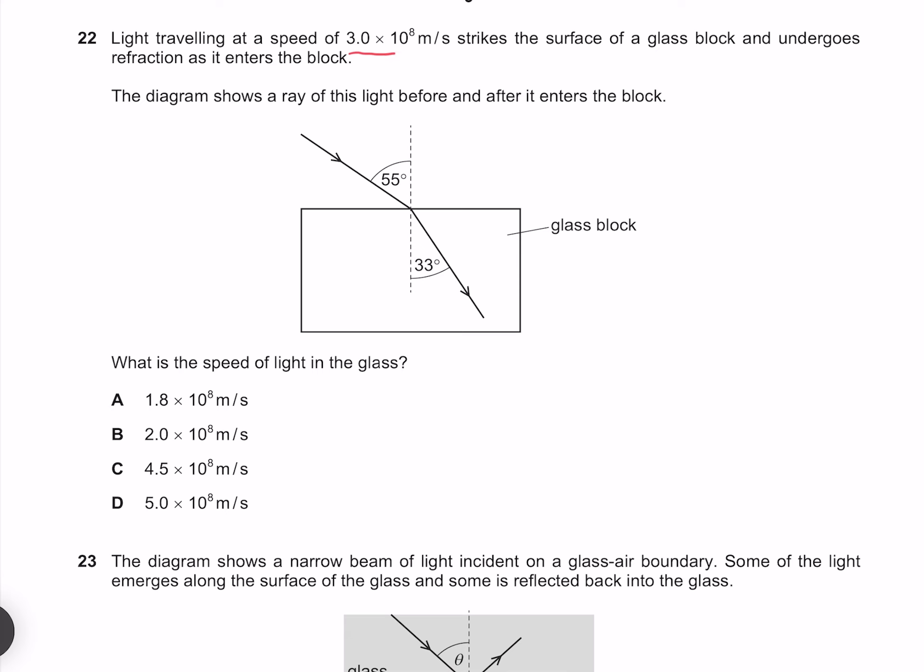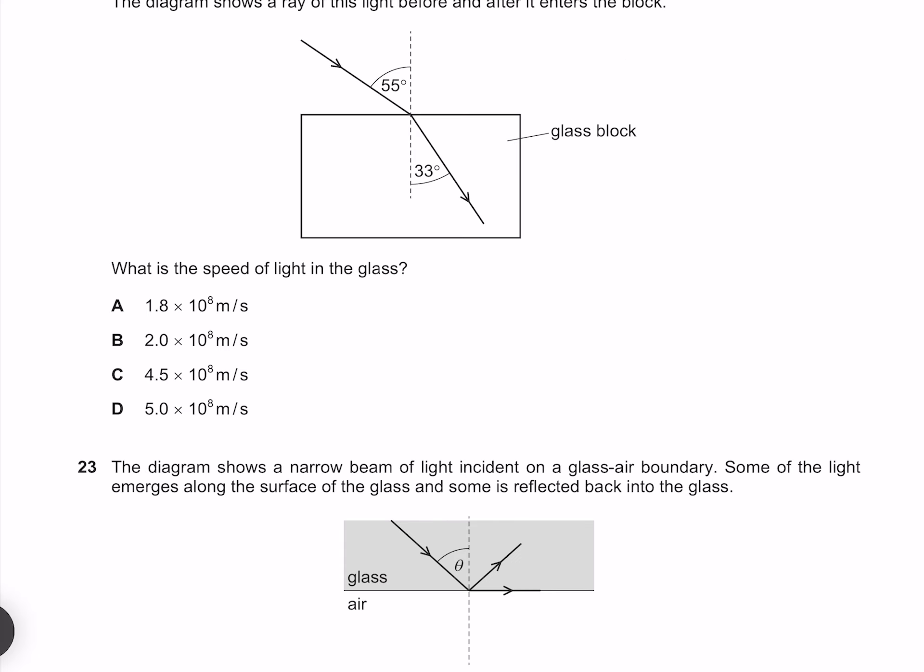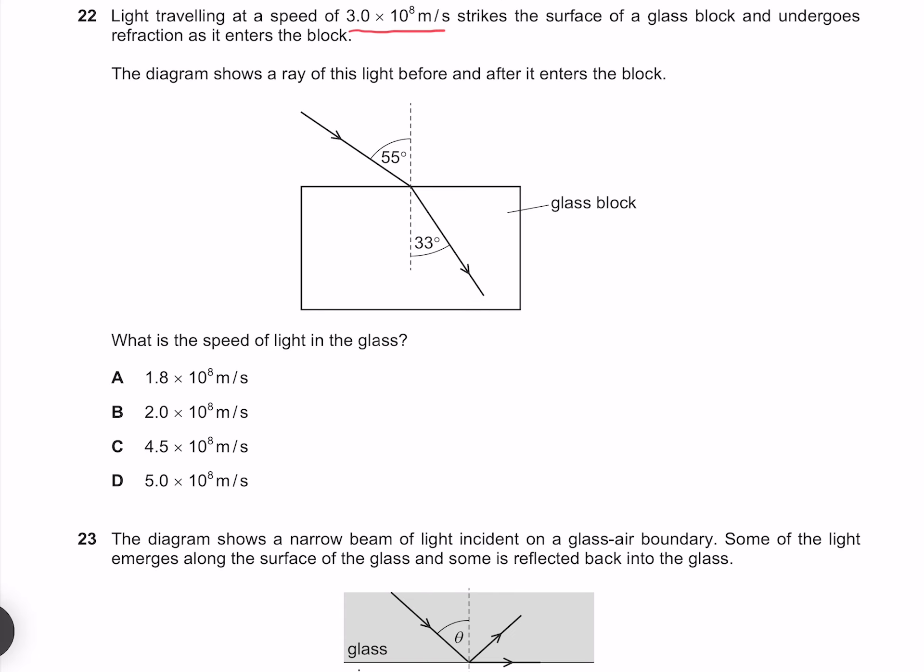Light traveling at 3 times 10 to the 8 meters per second strikes the surface of a glass block and undergoes refraction as it enters the block. The diagram shows a ray of this light before and after it enters the block. What is the speed of light in the glass? The ratio of these signs of our angles is equal to the ratio of our velocities. Rearranging that for velocity gives me 2 times 10 to the 8 meters per second. And so our answer must be B.